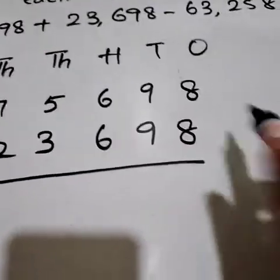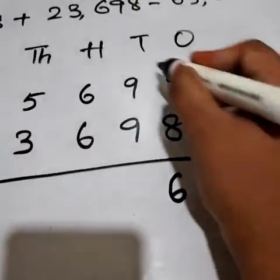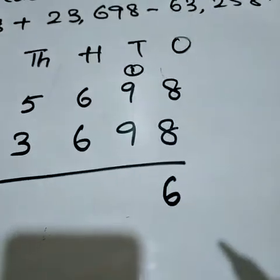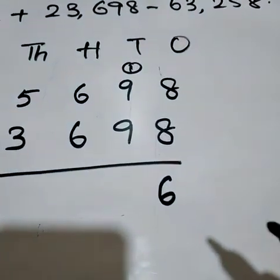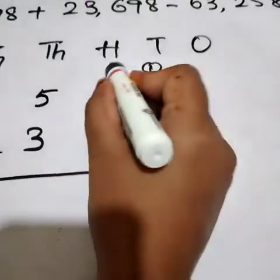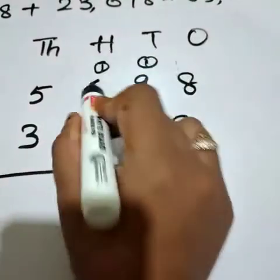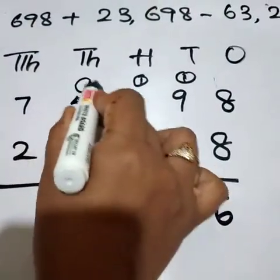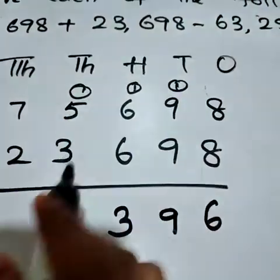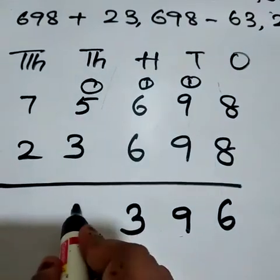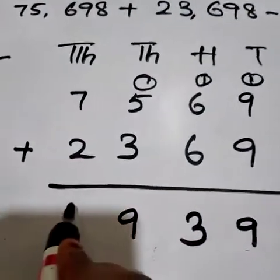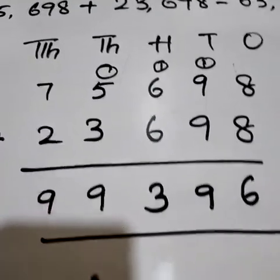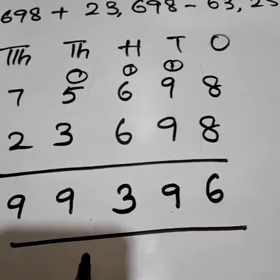Let us start. 8 plus 8, 16. So 6 here, 1 carry here. 9 plus 9, 18 plus 1, 19. So 9 here, 1 carry here. 6 plus 6, 12 plus 1, 13. So 3 here, 1 carry here. 5 plus 1, 6. 6 plus 3, 9. 7 plus 2, 9. So what we got here? 99,396.